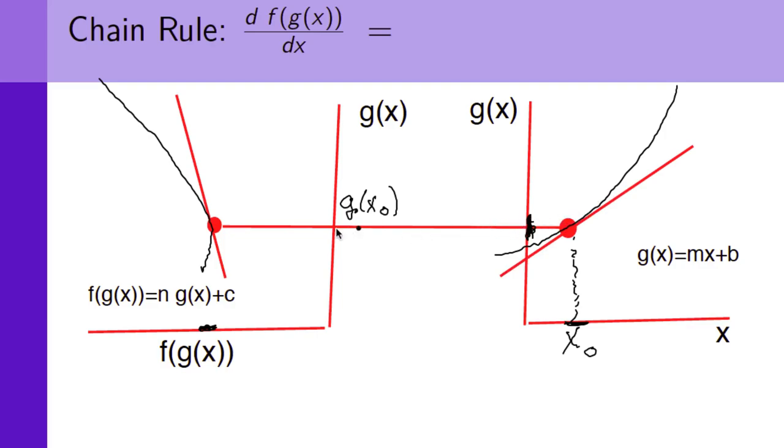Just a straight line. So we know that right there we can approximate g by this straight line. Now, g of x carries over here, and we can do the same for f of g of x, and it is represented by this straight line. So, the representation of f as a straight line in g is n times g of x plus c. This is just like mx plus b.